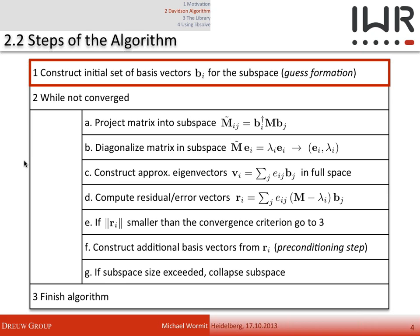If this residual or error vector is smaller than the convergence threshold, you are done. Otherwise, you use these residual vectors to construct additional basis vectors in a preconditioning step. Optionally in step G, when the subspace size becomes too large, you can collapse the subspace. Then you start the loop again — constructing the new subspace matrix, diagonalizing, and so on — until converged or the maximum number of iterations is reached.